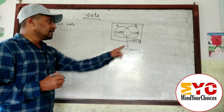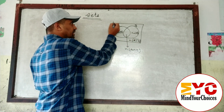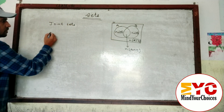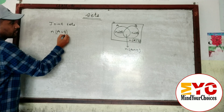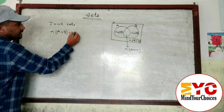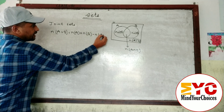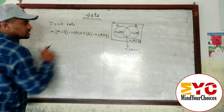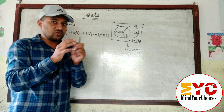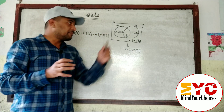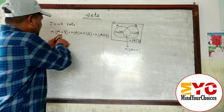And the outer part is n(A∪B)' — which means it does not belong to A as well as B. Here is U. Now, what is the formula of n(A∪B)? n(A∪B) equals n(A) plus n(B) minus n(A∩B). Why do we subtract? By looking at the diagram you can create the formula yourself.